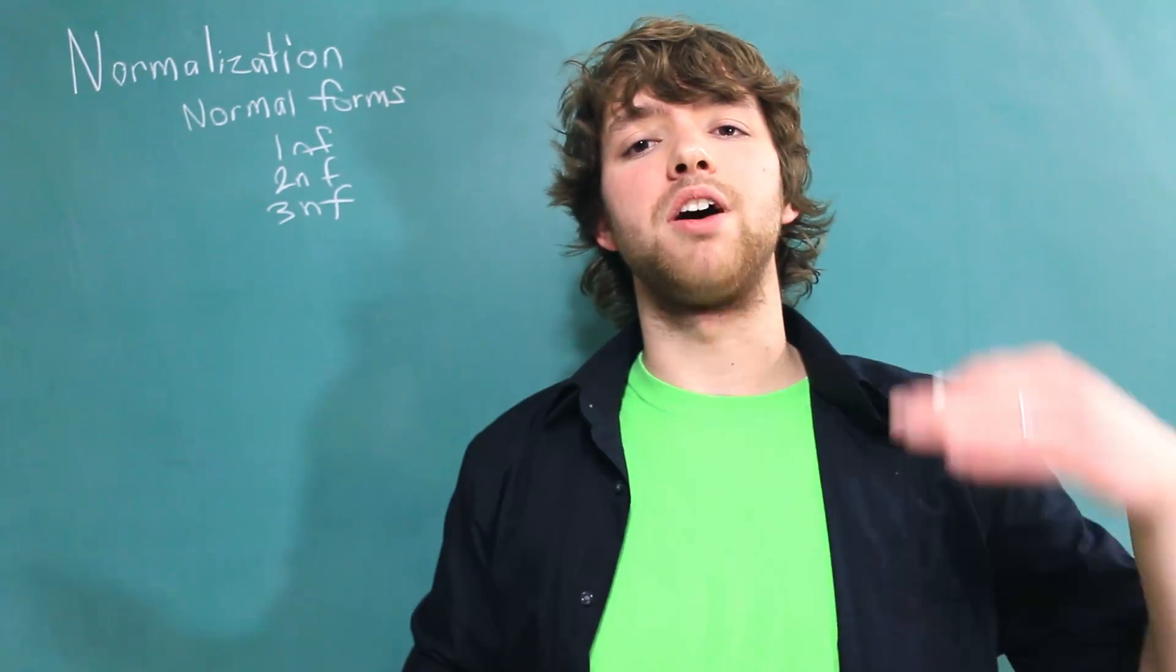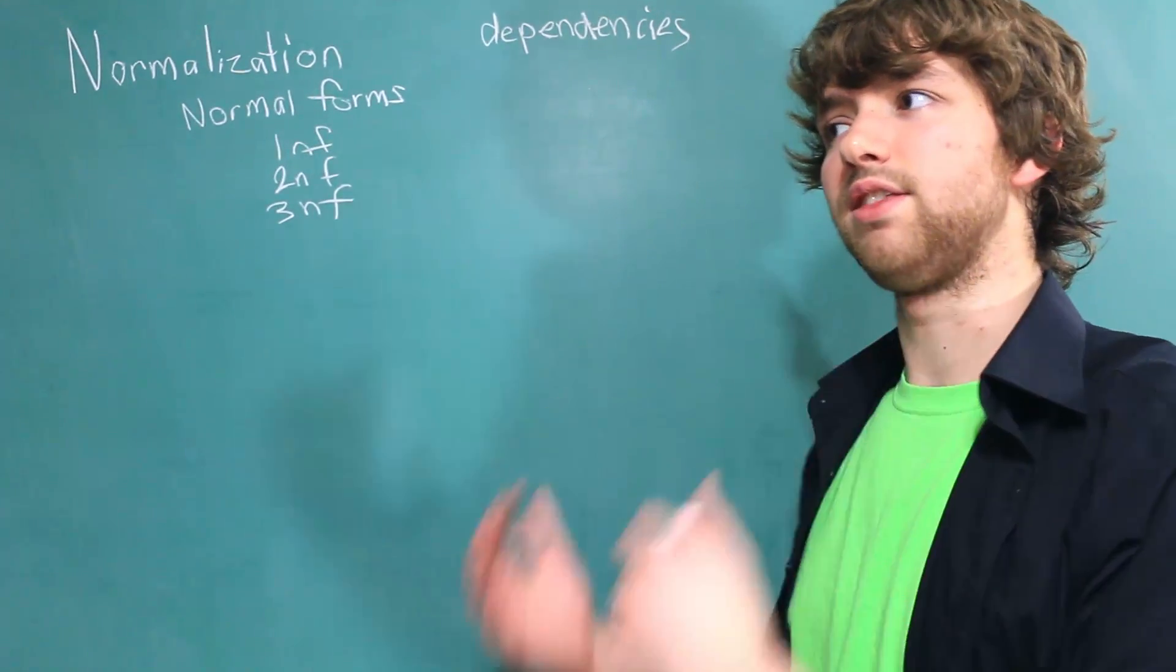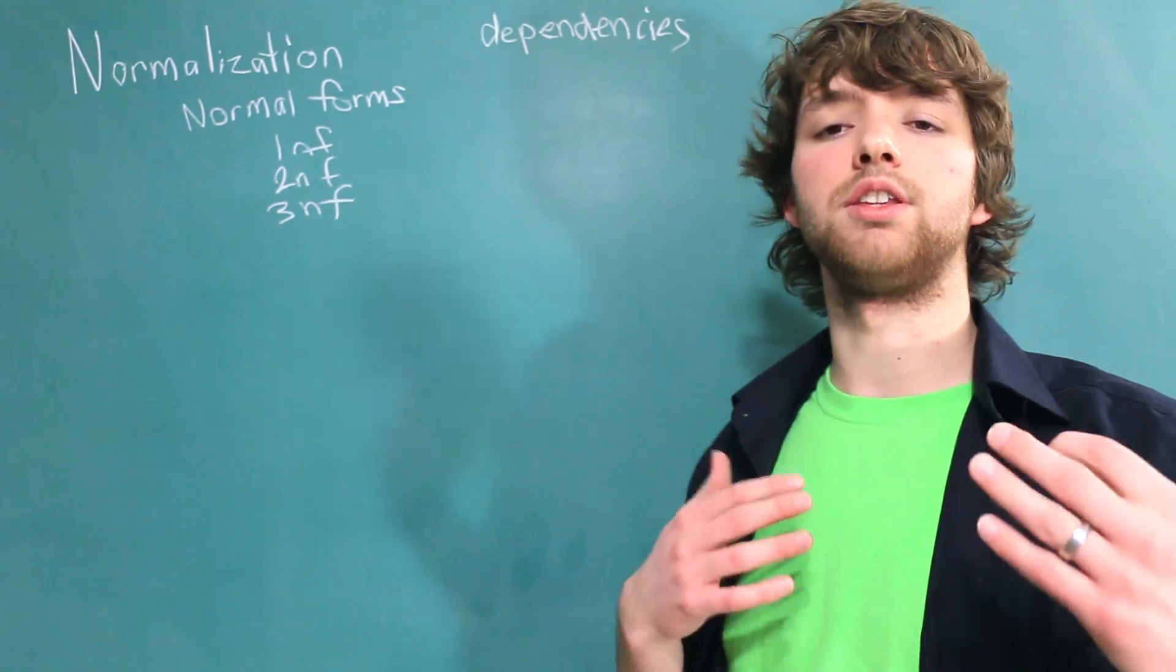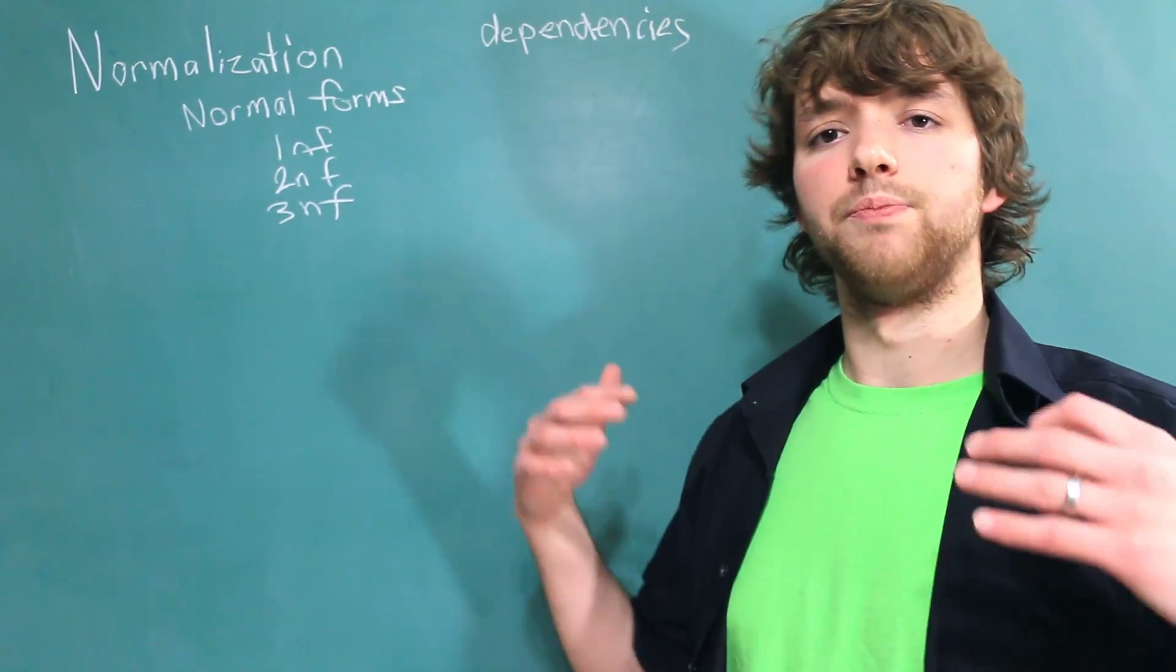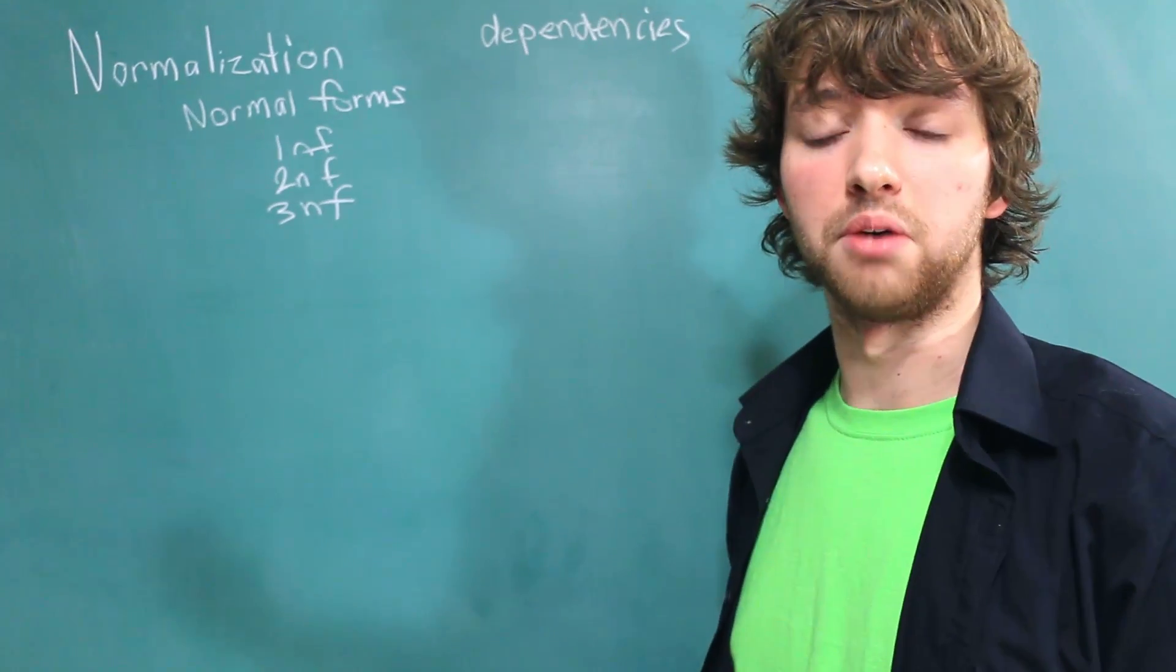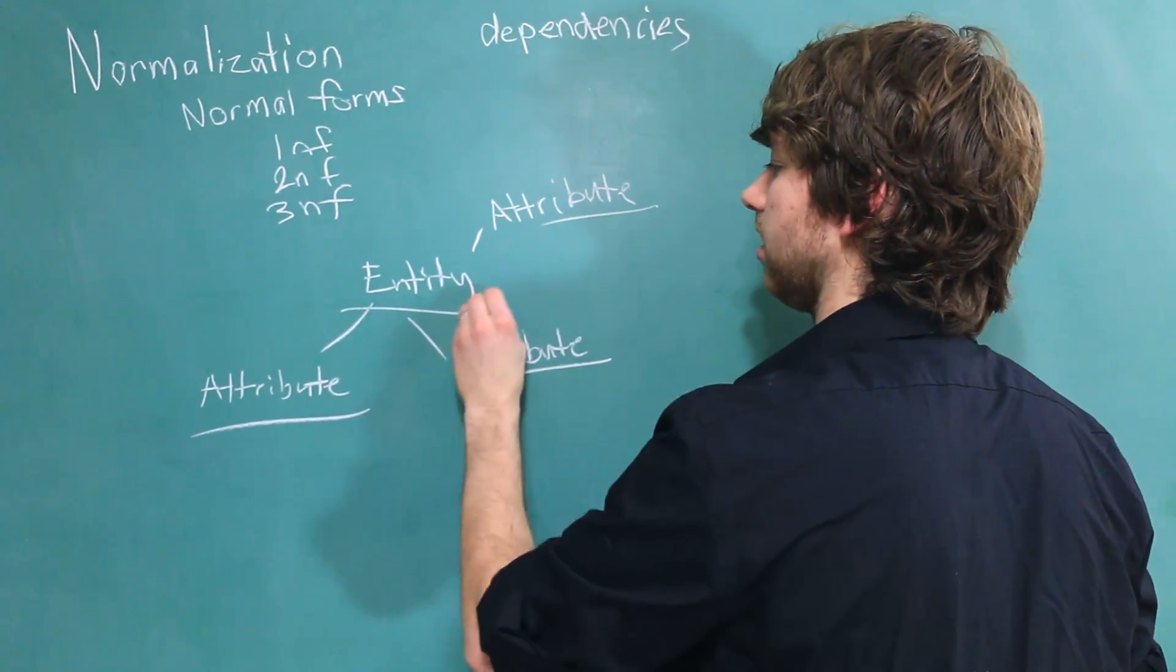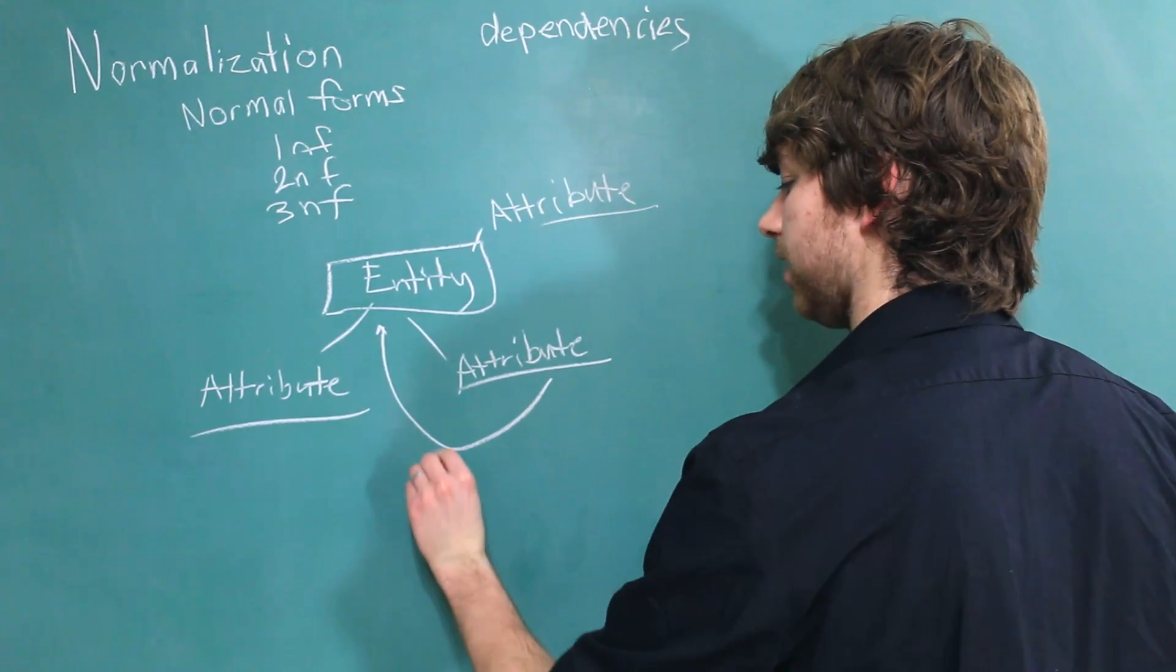When we study this stuff, the concept of dependencies will come up. Now what is a dependency? Essentially a dependency is when a thing depends on something else. And the simplest way I can explain that is using the idea of entities and attributes. And this goes back to way the beginning of this series. But essentially an entity is anything we want to store data about, and an attribute is the data we store about the entity. You could, however, word it that the attribute depends on the entity. And this would be a dependency.